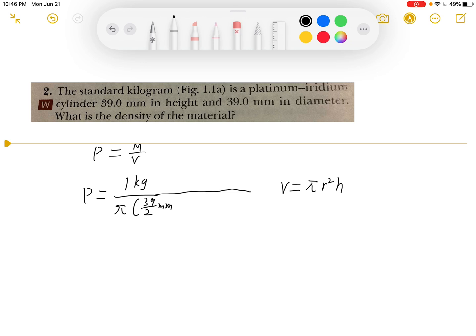Because it's in millimeters, we need to convert to meters. We need to multiply by 1 meter over 1000 millimeters, quantity squared.